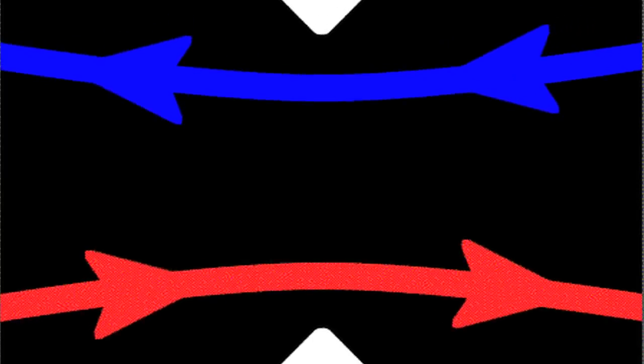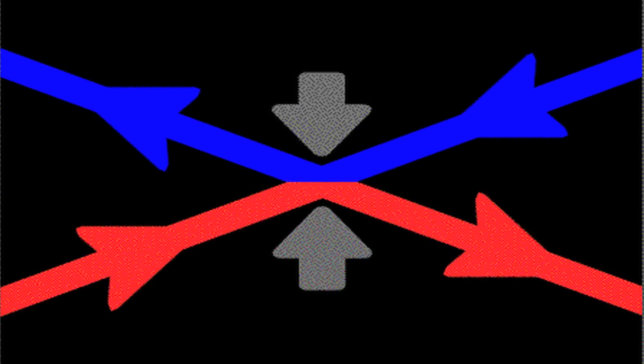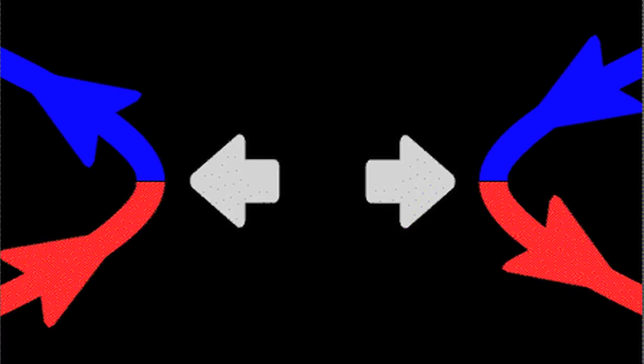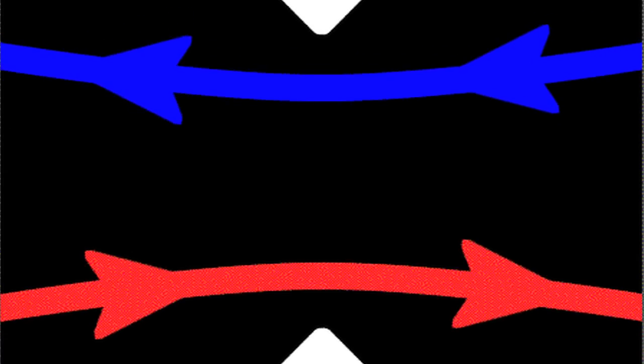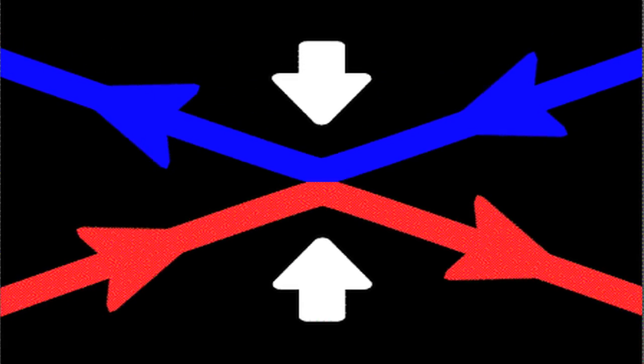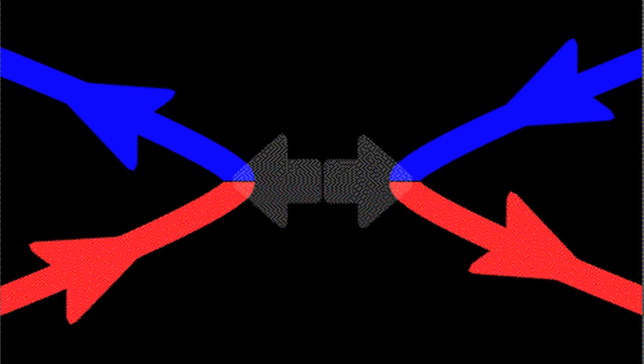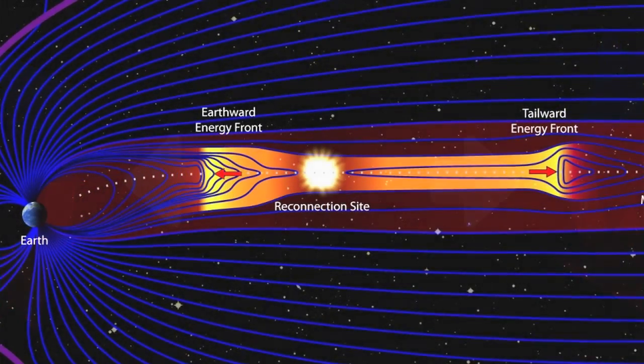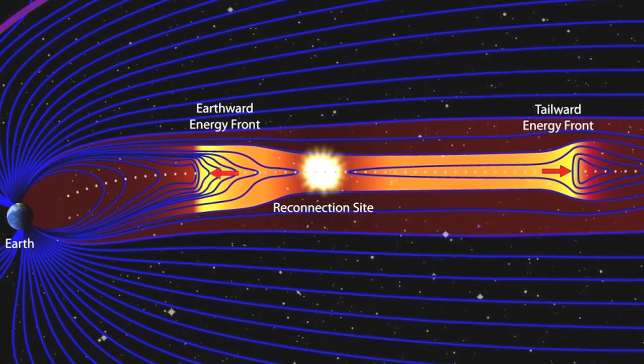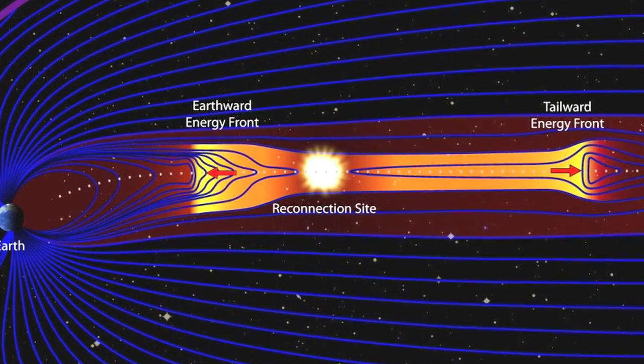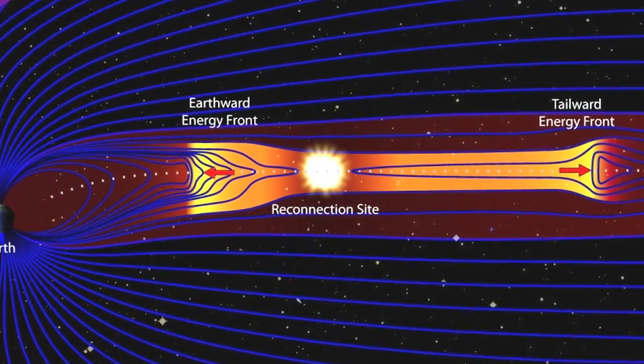This is effected, so the idea goes, by some of the lines of force breaking and then joining up with different lines of force, thus producing a magnetic field pattern that stores less energy. The energy difference between the two patterns is manifested by conversion to the energy outburst requiring to be explained.